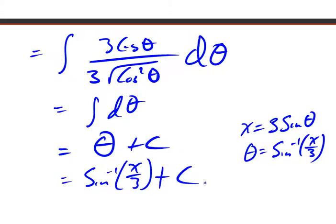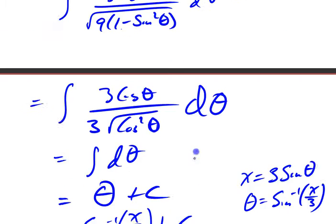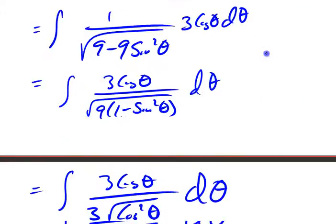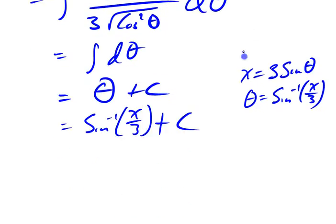If you've got one of those inverse trig derivatives that you're trying to take the antiderivative of — if you can recognize it, great. If you can't, there you go. It just comes out in the wash. It looks like a trig sub should work on it, and a trig sub works on it, and you get the answer.